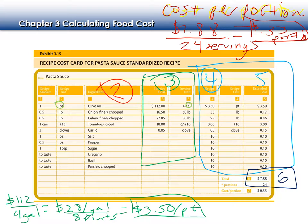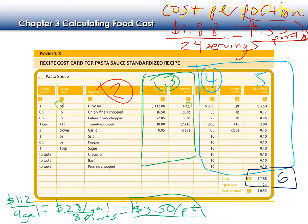Portion size can come in weight, volume, or count. Portion control is important — for example, our spaghetti sauce gives 24 servings. If I'm expecting to serve 48 portions and double my recipe, but my line cook adds a little extra sauce without thinking, I might end up with 48 portions of spaghetti and not enough sauce for two of them. That's why portion size and portion control are so important.